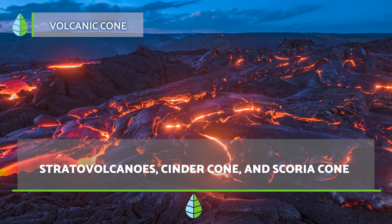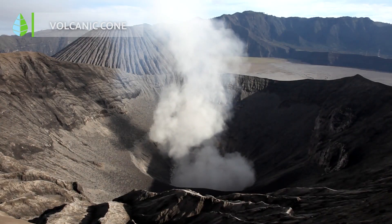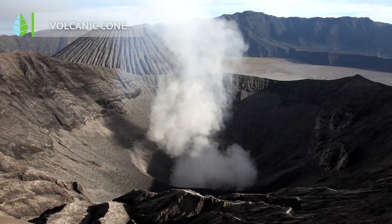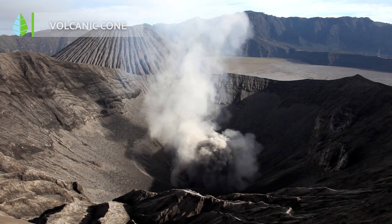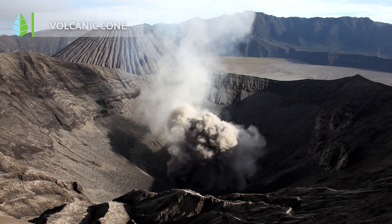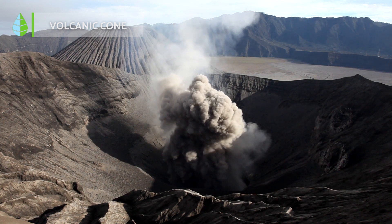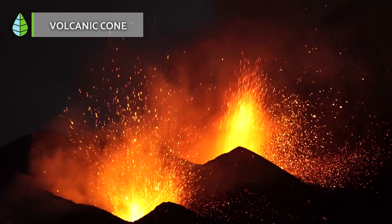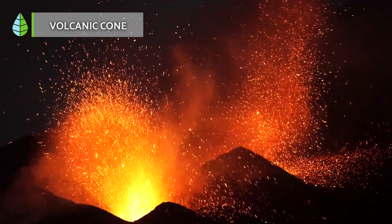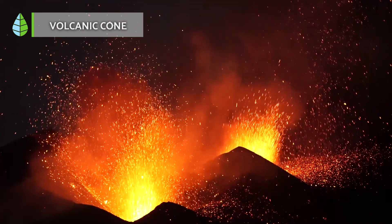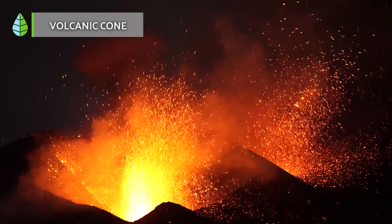Stratovolcanoes are characterized by their composite structure, which consists of alternating layers of lava and rock. Cinder cone volcanoes are formed from volcanic scoria, which is composed of larger fragments than ash. Scoria cones tend to have a steep slope and a conical shape. Additionally, secondary cones can form on a volcano when solidified lava accumulates on the main cone, and these secondary cones may have their own internal conduit connected to the primary conduit.